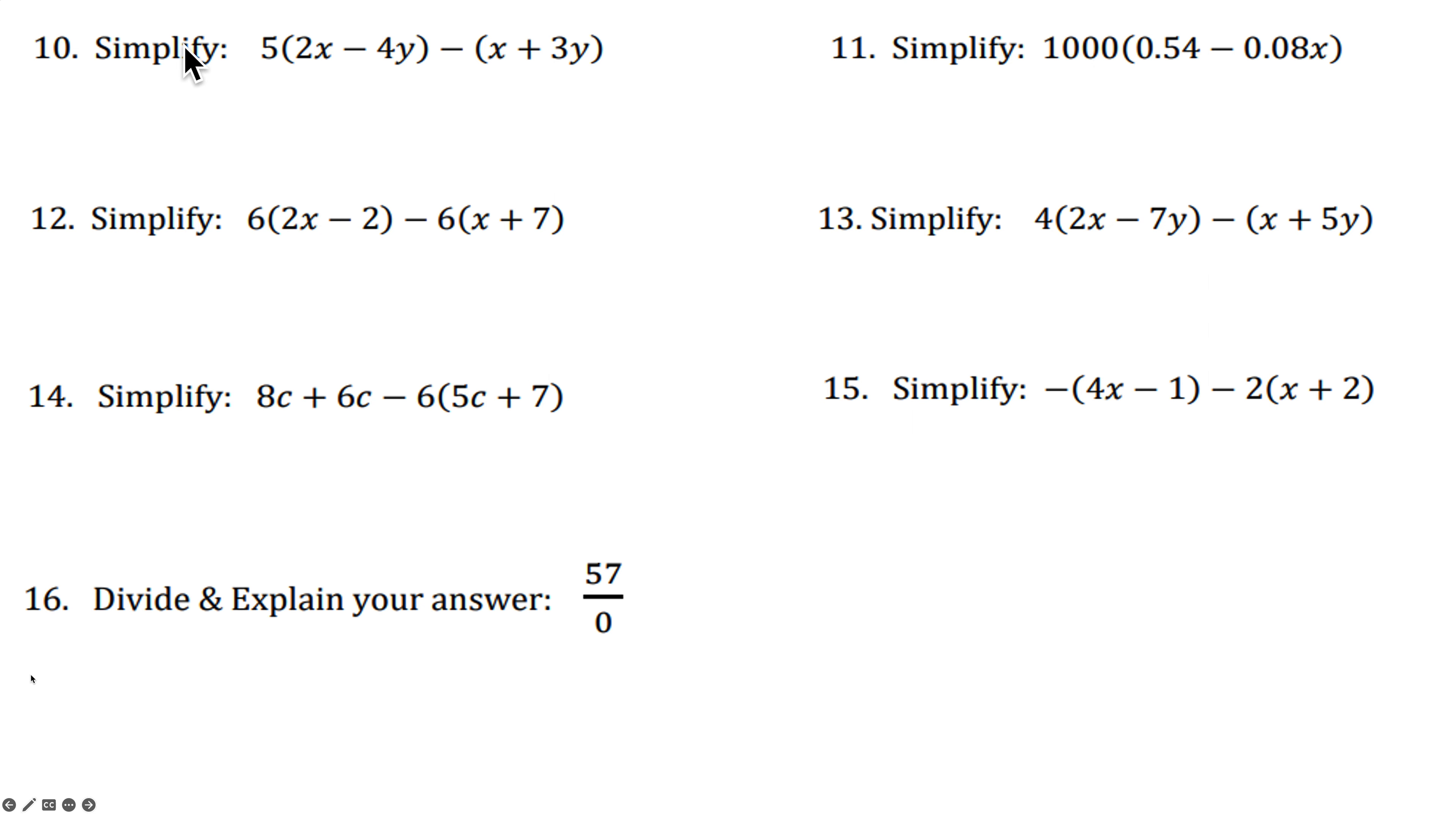Okay, number 10. And we have some distributive properties and some combining of like terms to do. 5 gets multiplied in. So that's going to be 5 times 2X is 10X. 5 times minus 4Y will be minus 20Y. This minus sign gets distributed. So it's going to be minus X minus 3Y. We combine like terms. 10X minus 1X. That will be 9X. Minus 20Y minus 3Y minus 23Y.